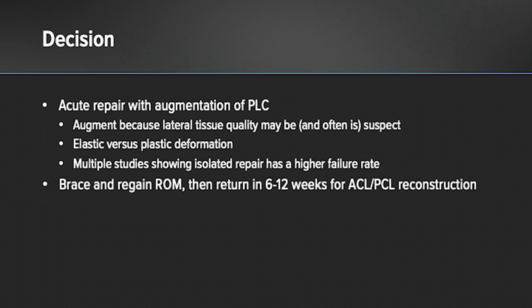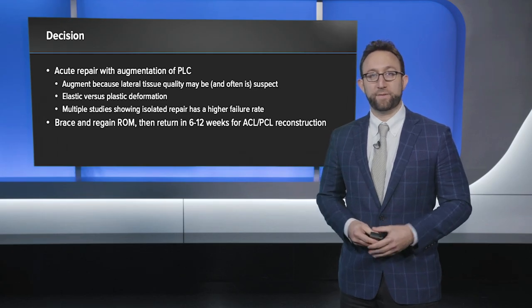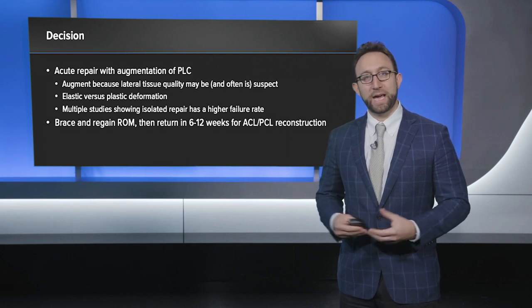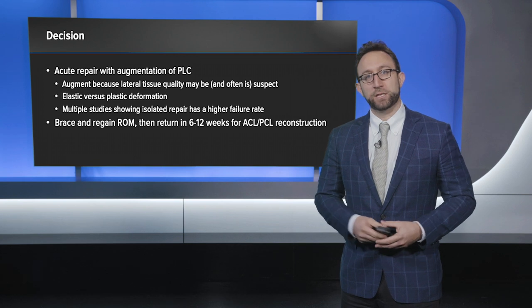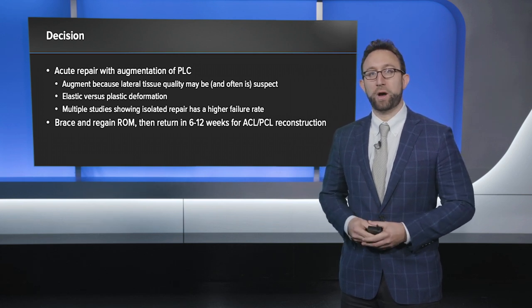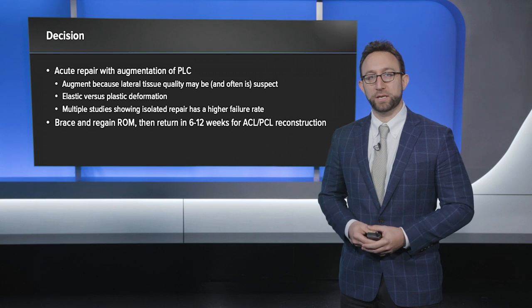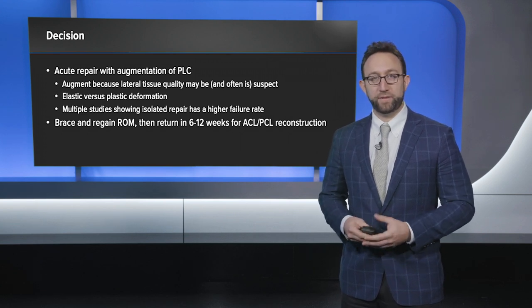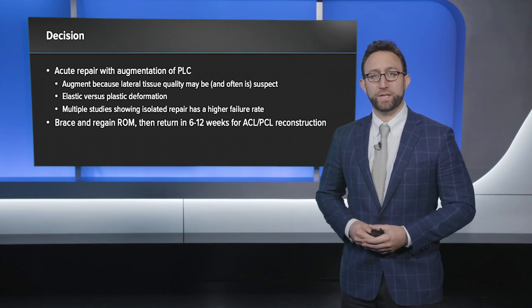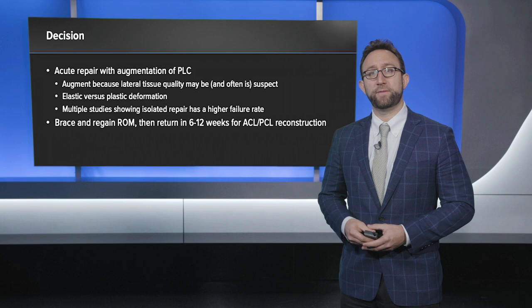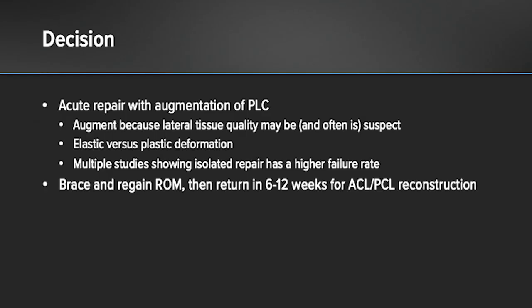For this particular patient, we chose to perform a staged procedure. The first stage was an acute repair with augmentation of the posterolateral corner using tibialis anterior allograft. We augment the lateral tissue because avulsed tissue is often suspect — ligaments first undergo elastic deformation then plastic deformation, changing their mechanical properties. Multiple studies, including those by Levy and Standard from the early 2000s, have shown that isolated repairs have higher failure rates. We then braced the patient to regain full range of motion, with the second stage of ACL and PCL reconstruction at six to twelve weeks.